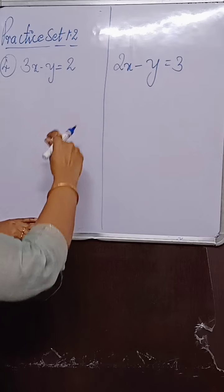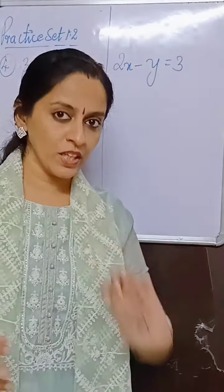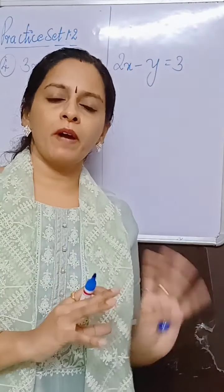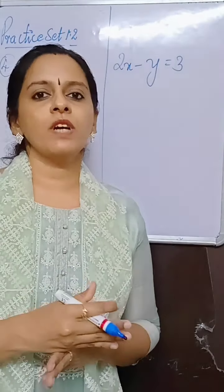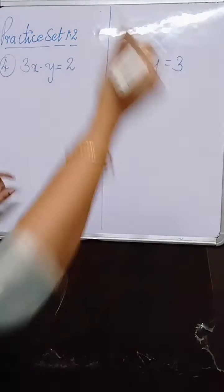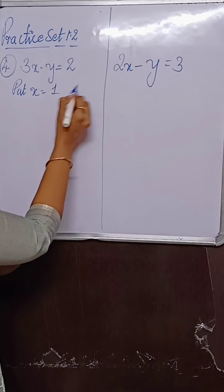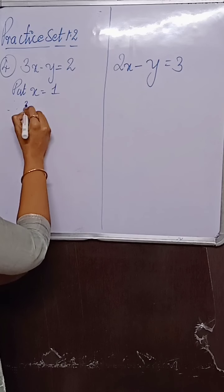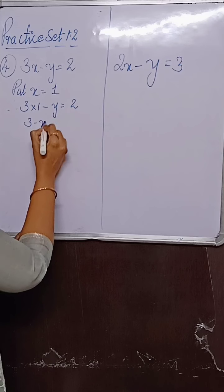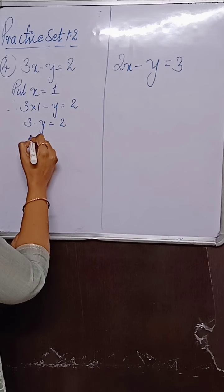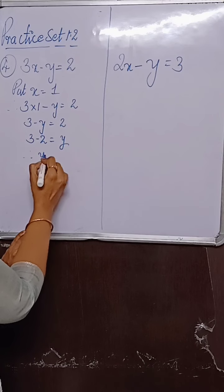Let us put different values for x and get the value for y. We will get four ordered pairs which we will plot on the graph, and the intersection of both the equations will give us the solution. So let us get started. Put x equal to 1. Therefore 3 into 1 minus y is equal to 2, so 3 minus y equals 2, giving us y equal to 1.